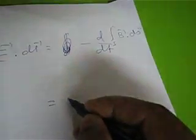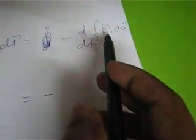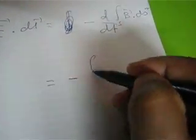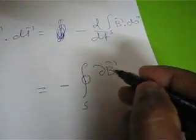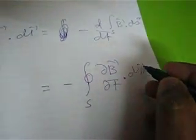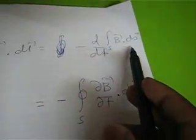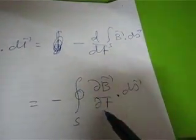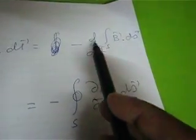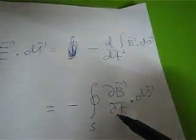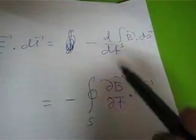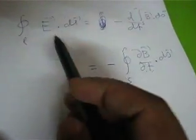We may write this as: minus the surface integral of del B by del t dot dS, because d/dt has been introduced inside the integration as the partial derivative del/del t. Since B dot dS is a product, but dS does not depend on time — the surface is independent of time — only B depends on time. That is why d/dt can be written as the partial derivative del/del t of B dot dS.